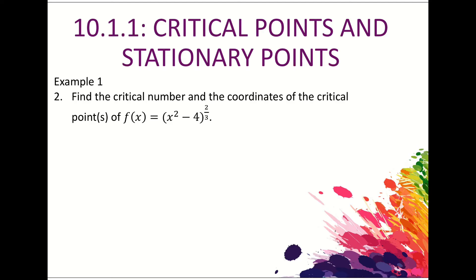Let's try Example 1, Question 2: find the critical numbers and the coordinates of the critical points of f(x) = (x² − 4)^(2/3). The critical number is the x-coordinate where dy/dx or f'(x) is equal to 0, and the critical points are the x and y coordinates of those points. First, we need to find the first derivative of f(x).